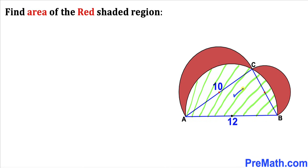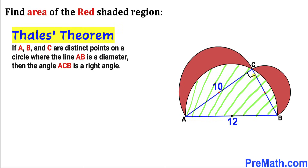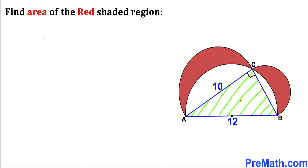Let's focus on this semicircle and triangle ABC inside, and recall the Thales theorem. According to this theorem, if A, B, and C are three distinct points on the circle where the line AB is a diameter, then the angle ACB is going to be a right angle. As you can see in this diagram, AB and C are distinct points on this semicircle whose diameter is AB. Therefore, according to Thales' theorem, angle ACB is 90 degrees, and we conclude that triangle ABC is a right triangle.